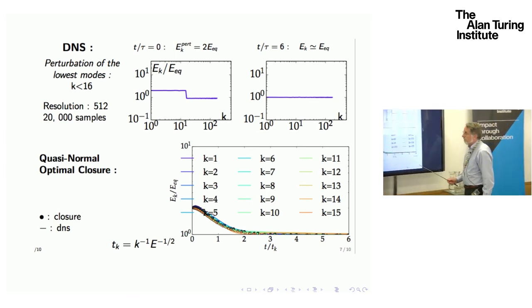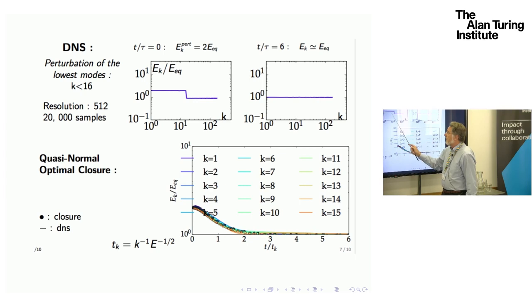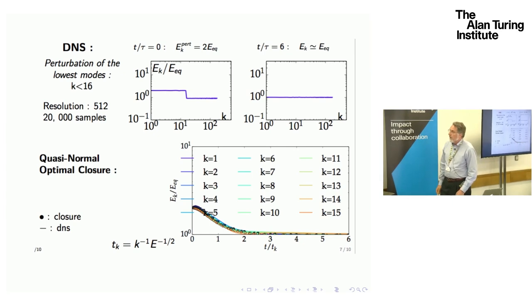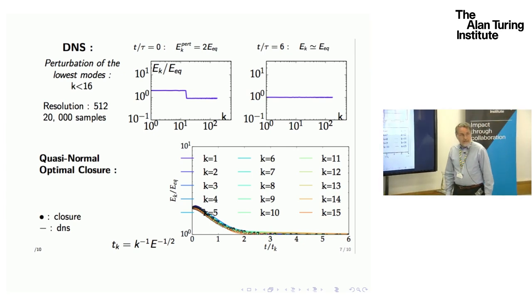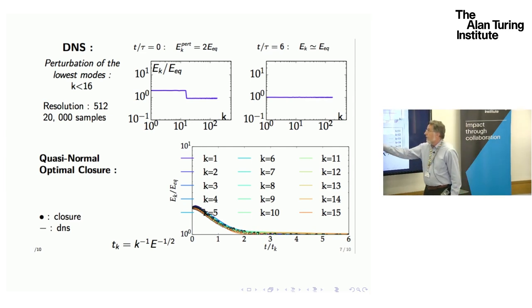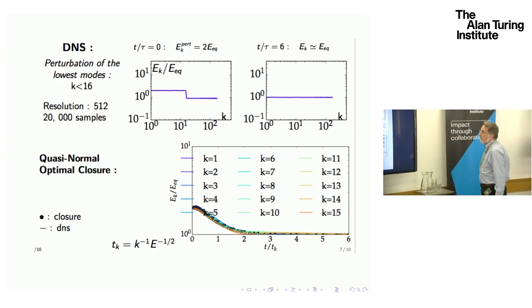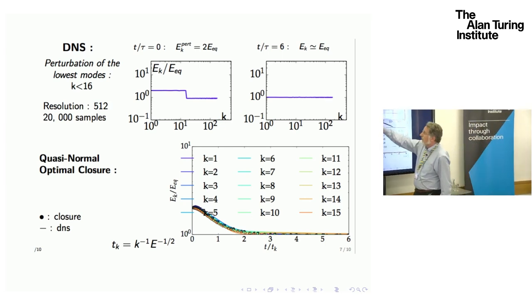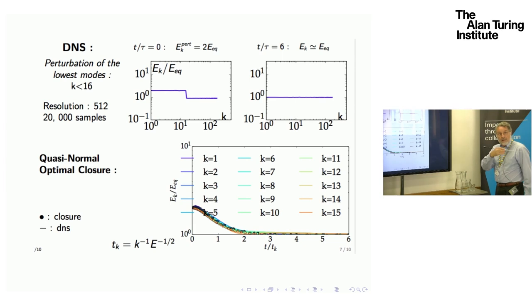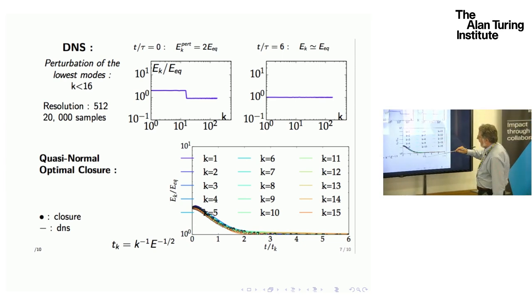You can just play the same game now. Let me take the lowest 15 modes and double all their energies, and then have the energies of the remaining modes out to 512, essentially, in the equipartition value. You could argue that this is still somewhat near to equilibrium, since there are preponderantly more modes in equilibrium than out. But there is still a substantial energy flow out of this little block of modes that has twice as much energy that has to flux into equipartition.